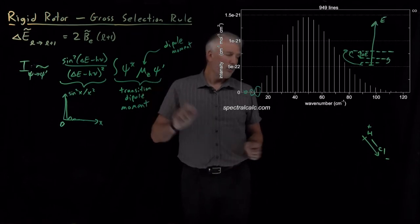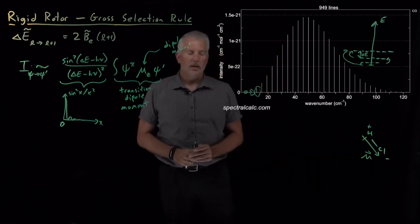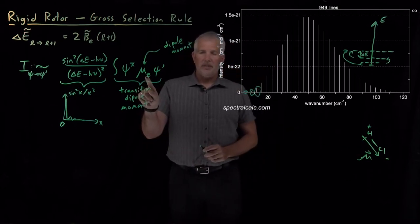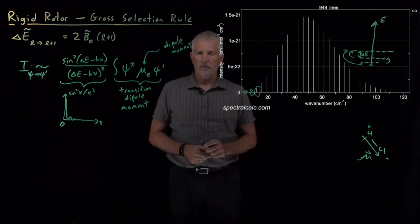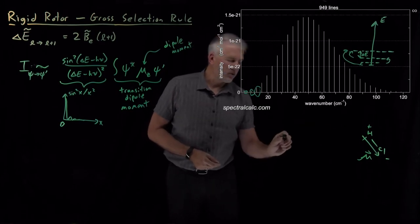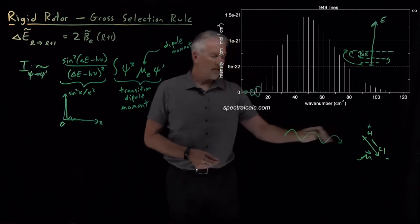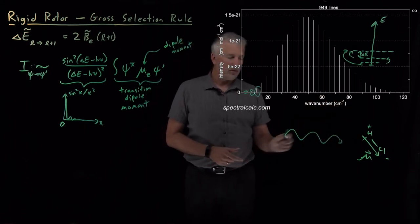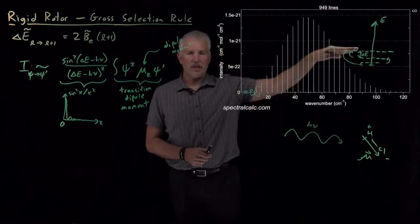This mu sub z, and we would call that vector mu, mu sub z is the component of that vector in the direction that is the same as the direction of the oscillation of the electric field of the photon that we're shining on the molecule. So if I take a photon, shine it at this molecule, and I'm going to ask, does this molecule absorb light? Does it absorb this particular photon in order to make a transition from one state up to another state?